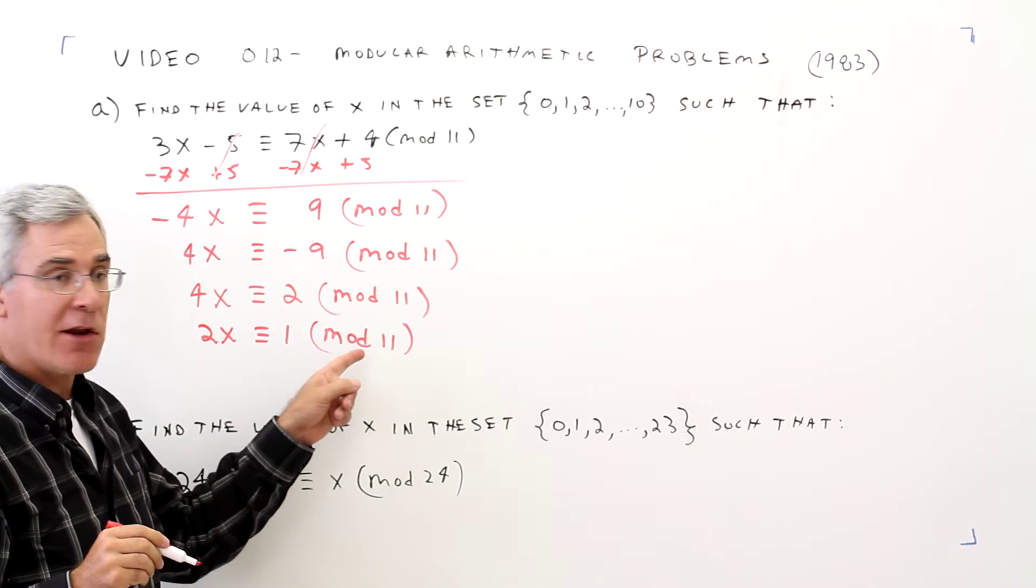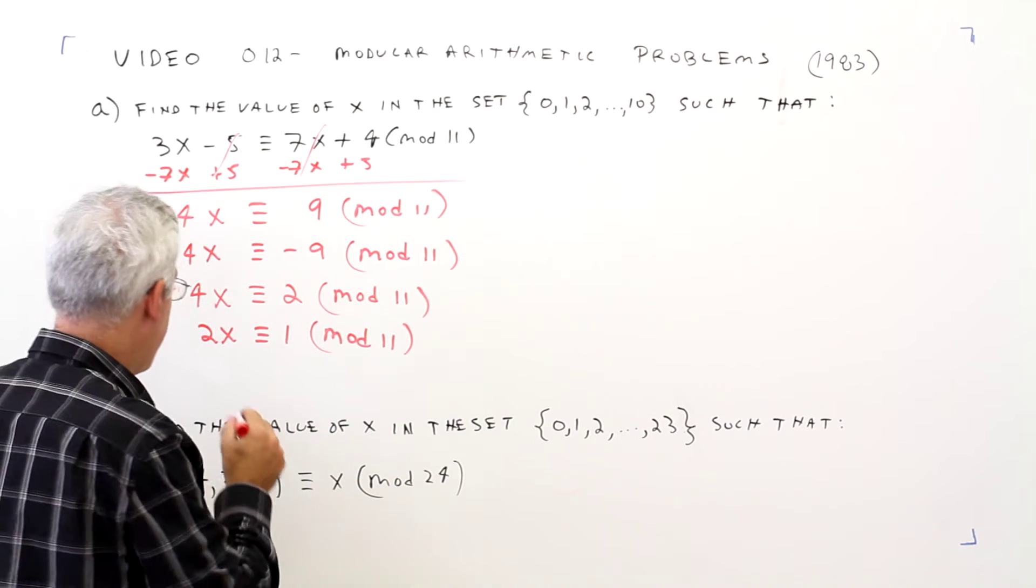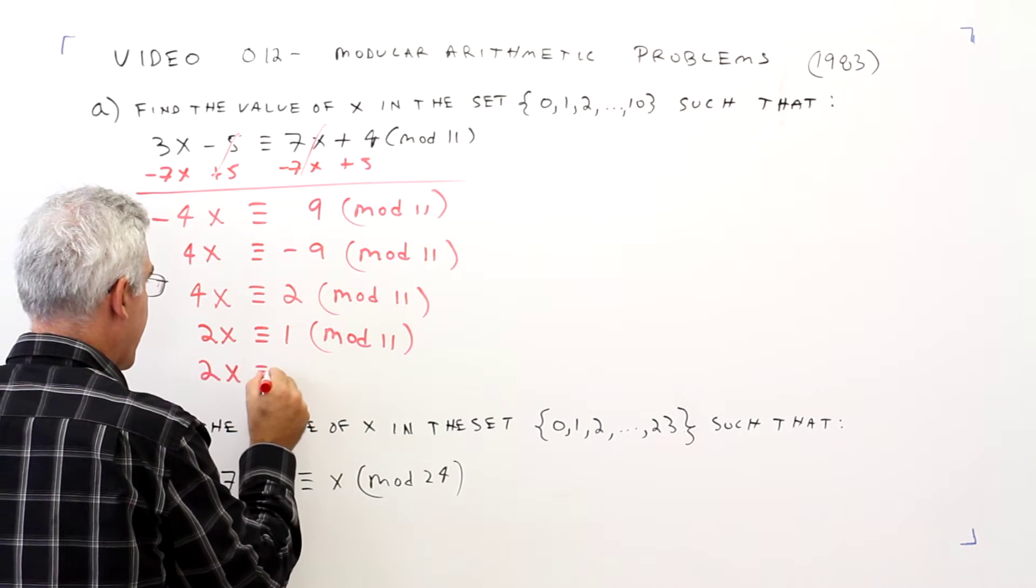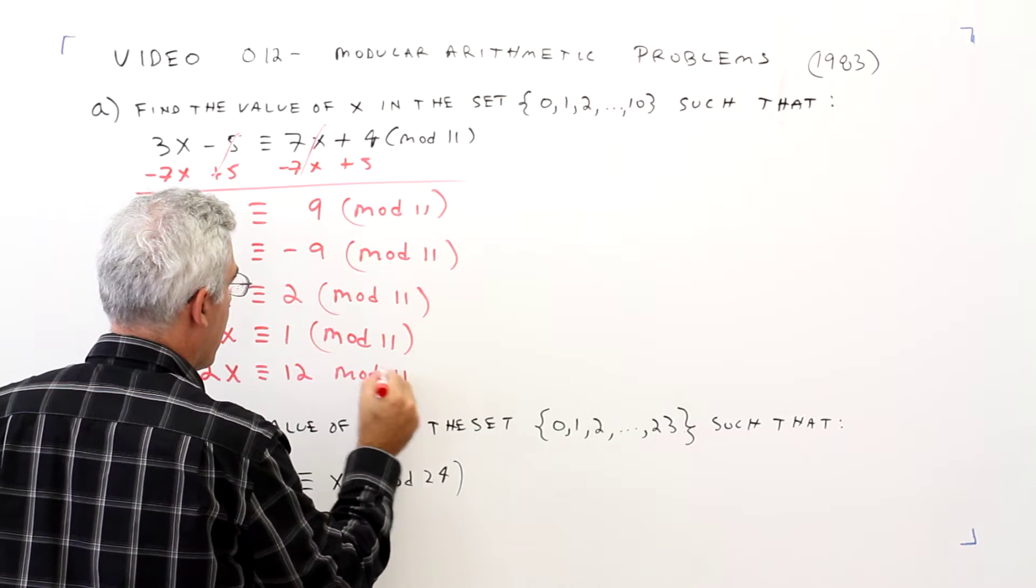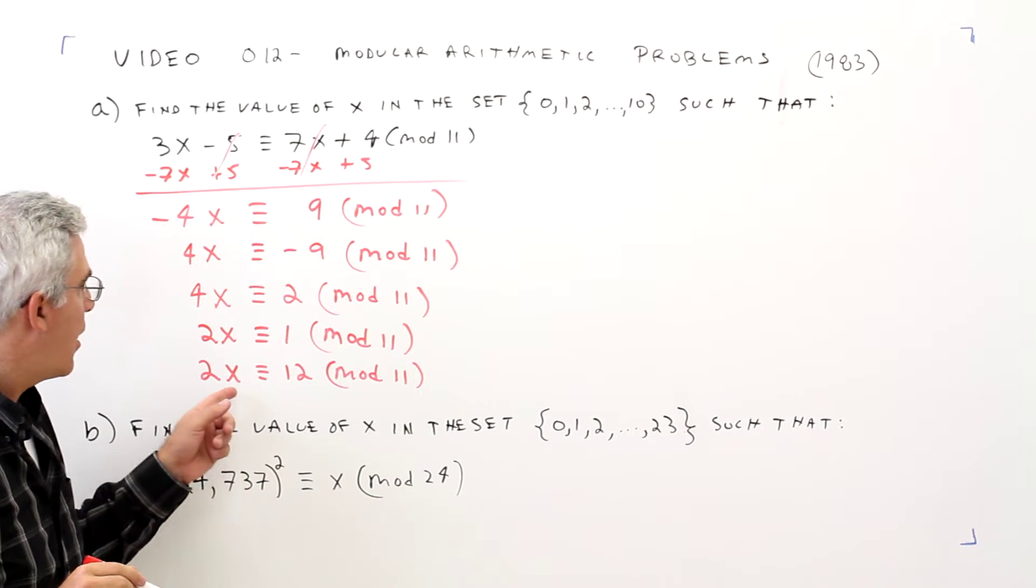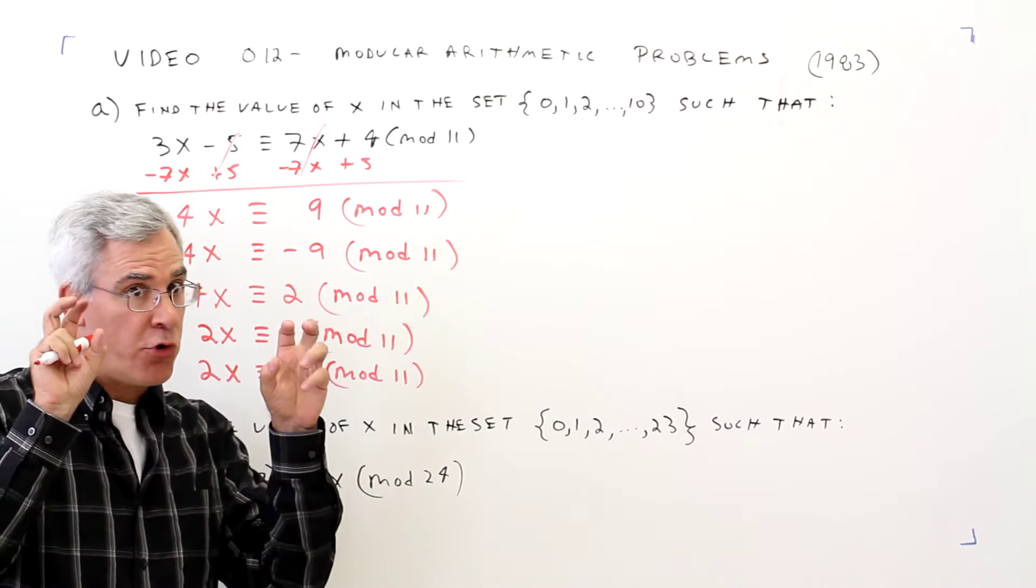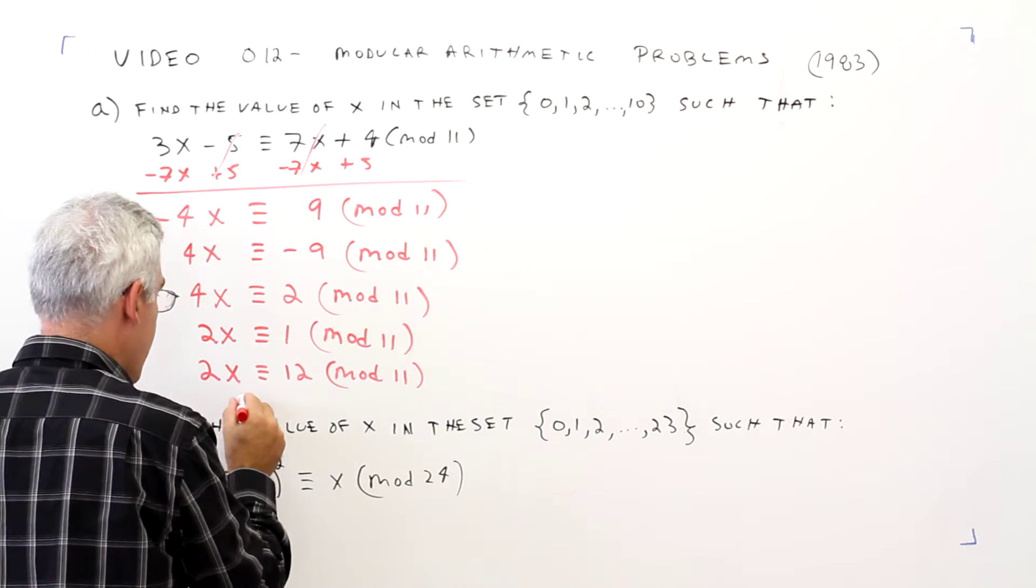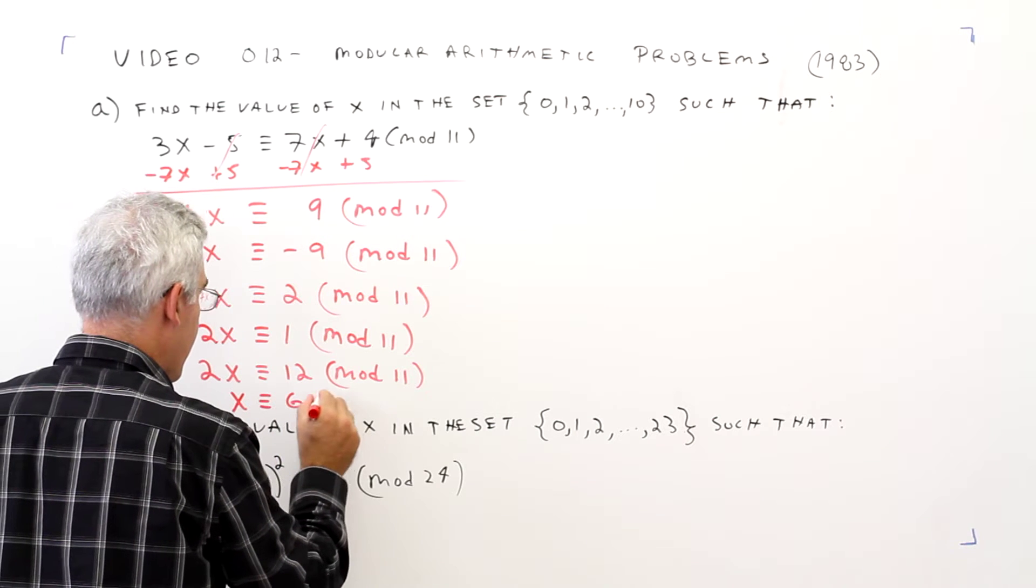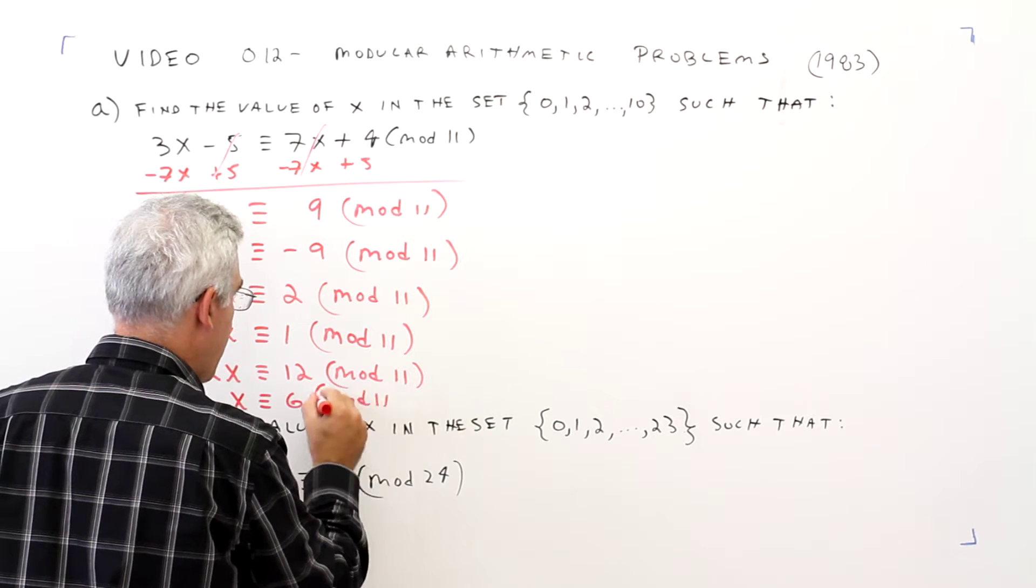And then what I can do is just add a cycle of 11. 2x is congruent to 12 mod 11. Once again, I can do normal division. I've got a factor of 2 here, no factor of 2 here. x is congruent to 6 mod 11.